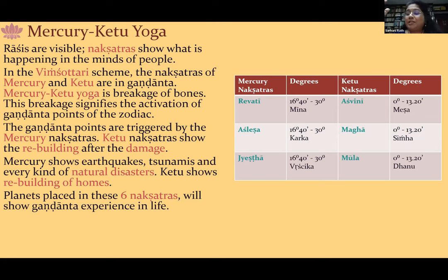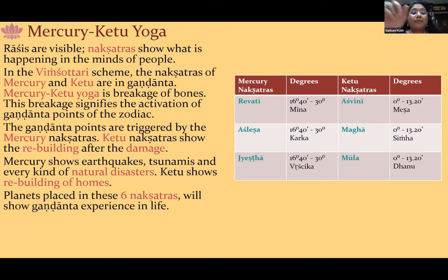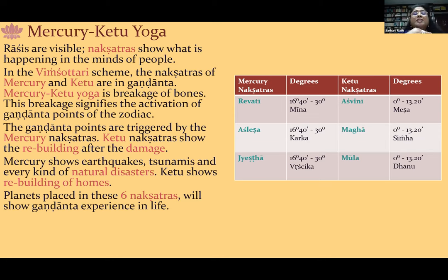Maharishi Jaimini has taught us that Mercury-Ketu forms a yoga for the breakage of bones. Mercury is all Prithvi Tattva, the Rajas Guna graha, and only Ketu has the capacity to destroy the Rajas Guna graha. So Mercury-Ketu is a breakage-of-bones yoga. These two grahas are signifying the activation of the Gandanta points of the zodiac. The Gandanta points are triggered by the Mercury nakshatras, whereas the Ketu nakshatras show the rebuilding after the damage — if Mercury shows an earthquake or tsunami or natural disaster, Ketu shows the rebuilding of homes.